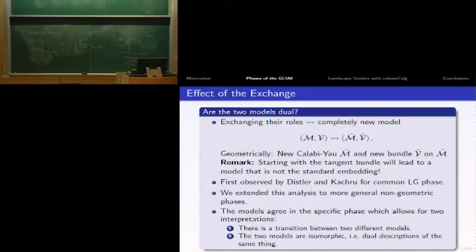If we start with a tangent bundle and perform this transformation, we usually don't end up with a Calabi-Yau with a tangent bundle on it - we get a nonstandard embedding model. This relation was first observed by Distler and Kachru for models sharing a Landau-Ginzburg phase. We extended this to more generic models that don't share a Landau-Ginzburg phase but share a more general non-geometric phase.